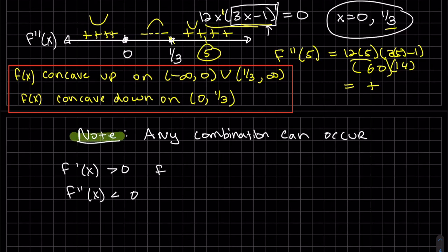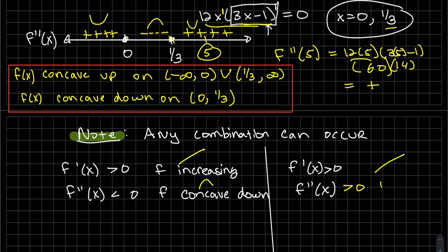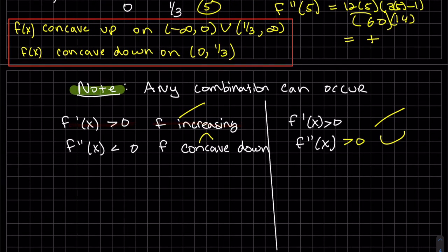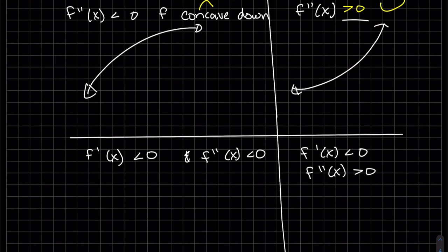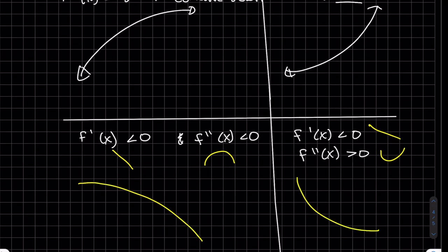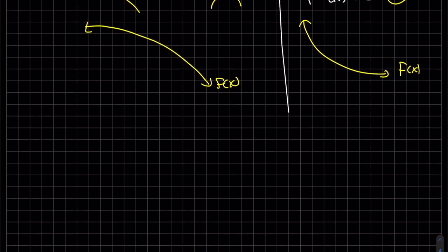When graphing functions, concave up, concave down, increase, and decrease — any combination can occur. For example, if f is increasing and concave down, the graph rises but bends downward like the top of a hill. If f is increasing and concave up, it rises like a bowl. We also get decreasing with concave down, and decreasing with concave up — try to draw those two scenarios.